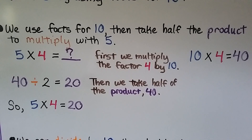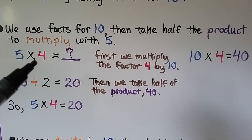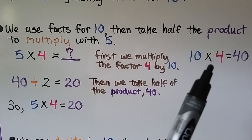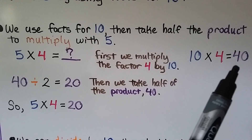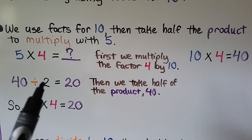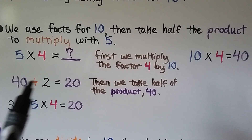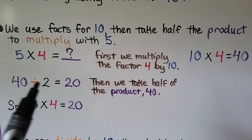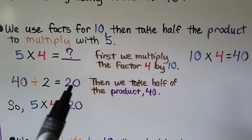We use facts for 10, then take half the product to multiply with 5. For 5 times 4: first we multiply the factor 4 by 10, so we do 10 times 4, which equals 40. Now we take half the product — we divide by 2, because dividing by 2 splits it into 2 equal shares. So 40 divided by 2 is equal to 20.